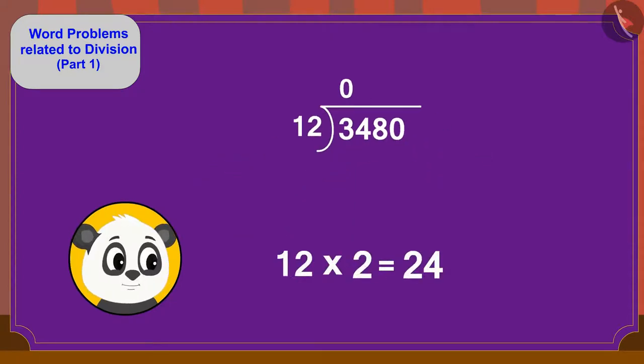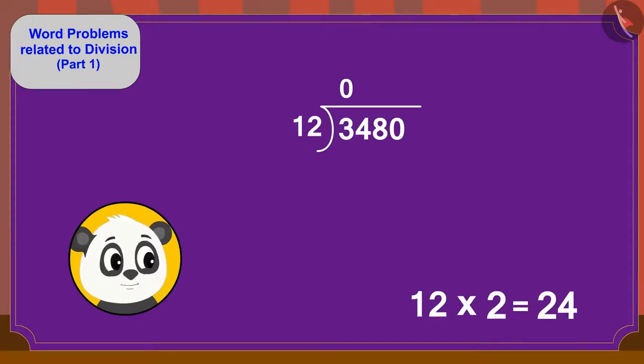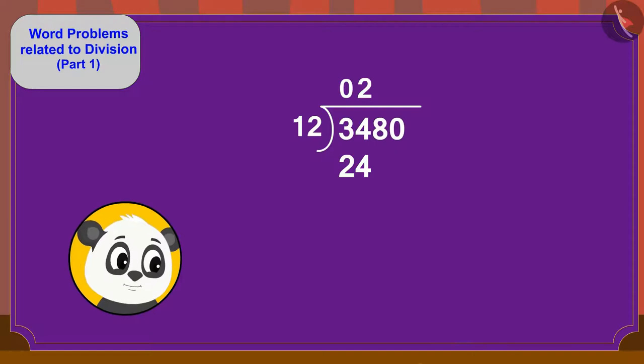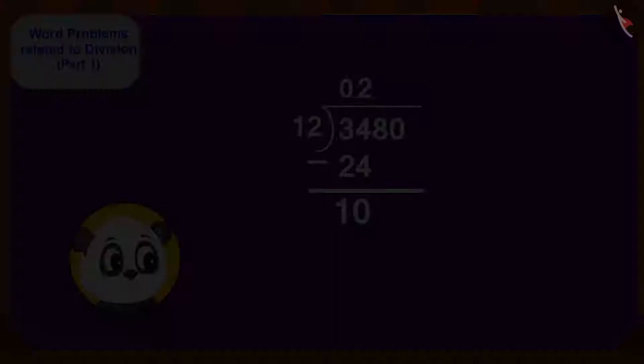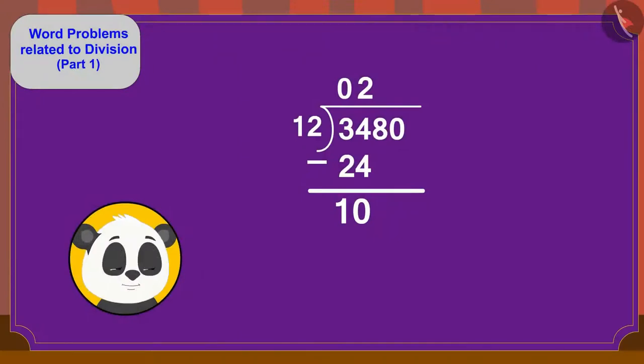Yes. 12 times 2 is 24. So, here we will write 2 above and below 24. After subtracting, we get 10. Now, because we cannot divide 10 by 12, we will write 8 down here next to 10.